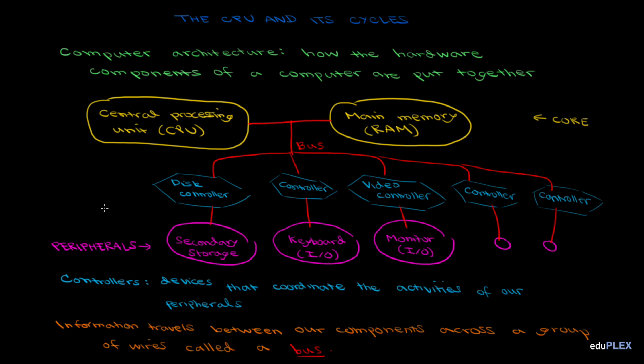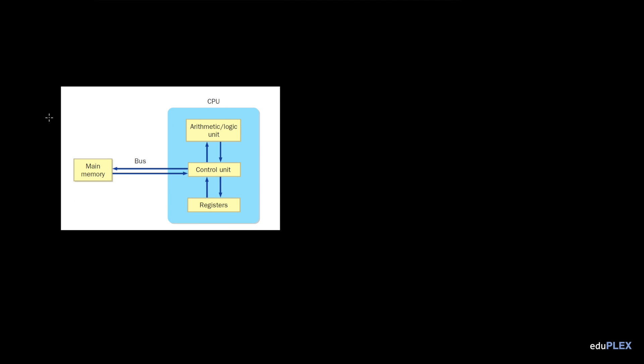Let's take a closer look at our CPU. The CPU interacts with main memory to perform all the processing in our computer, basically doing all the work. The CPU interprets and executes instructions one after another in a continuous cycle. This cycle consists of three parts.